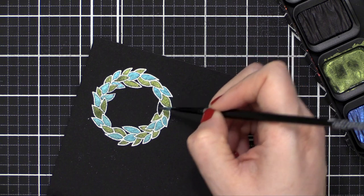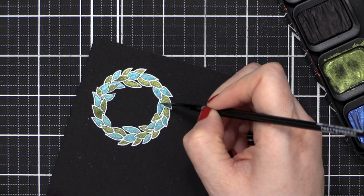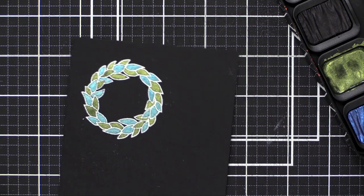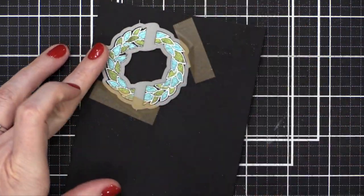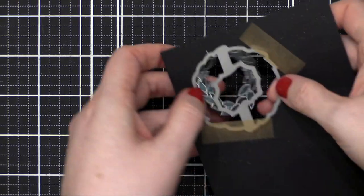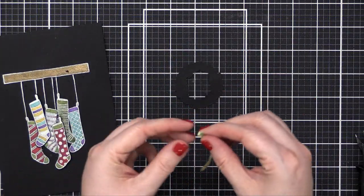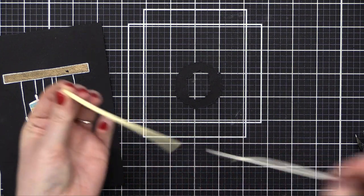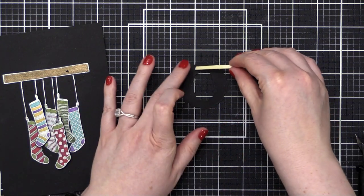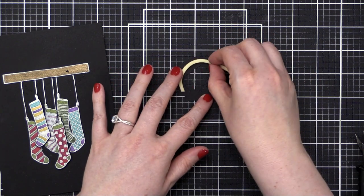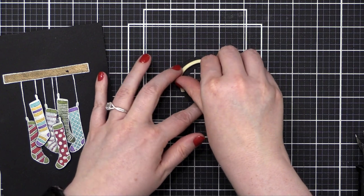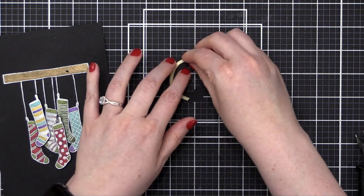Once that was all dry, I then grabbed the coordinating die and I cut this wreath out as well, just ran that through my die cutting machine. After I have it taped down—by the way, that tape I'm using is fantastic, it's new, I've only been using it for about a week or so. It's fantastic, I'll have a link down below. I really enjoy that tape. I've cut down a more narrow strip of foam tape and I've removed the release paper on both sides.